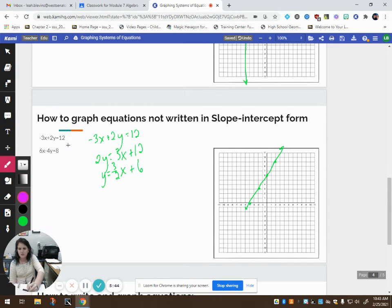So now let's look at the other equation. 6x minus 4y equals 8. I'm going to move the 6x over to the other side. So I'm going to have a negative 6x and a positive 8. I'm going to divide everything by negative 4.